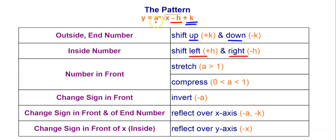The number in front of the radical — not the small root index up top, but the number in front of the radical — tells you if it's a stretch or compression. If it's bigger than 1, it's a stretch; if it's between 0 and 1, it's a compression. If you want to flip the function over, you change the sign of that a, or change the sign in front of the entire function.